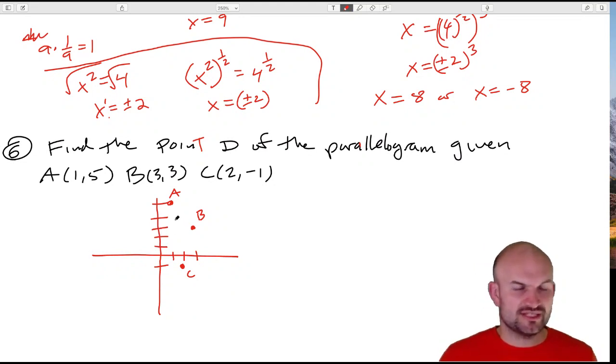So a couple different ways you can do this - I can just look at what is the relationship here from C to B? Well, it looks like it's over one, up one, two, three, four. So then, to go from A to D, I could go down four - one, two, three, four - to the left one.